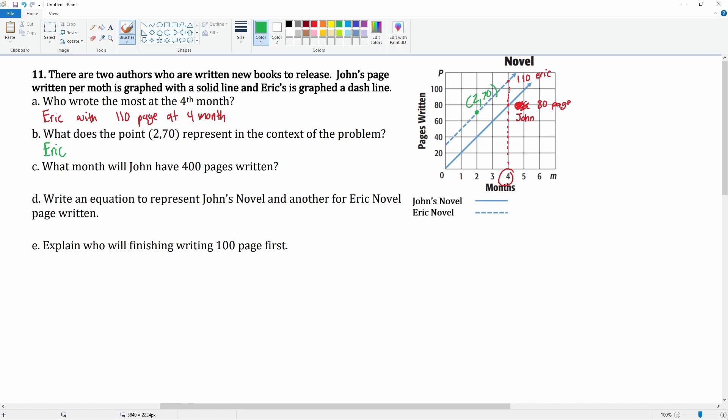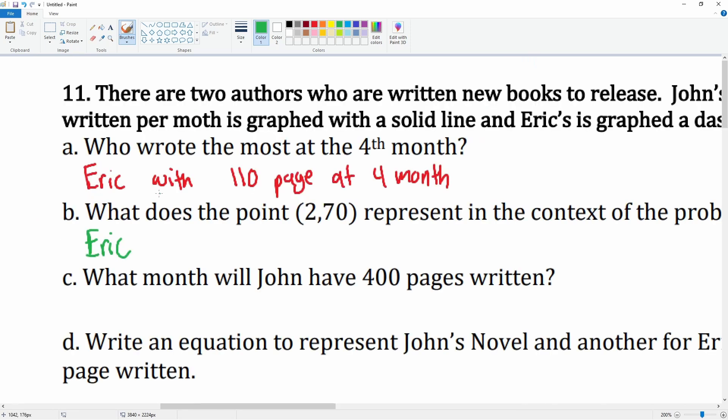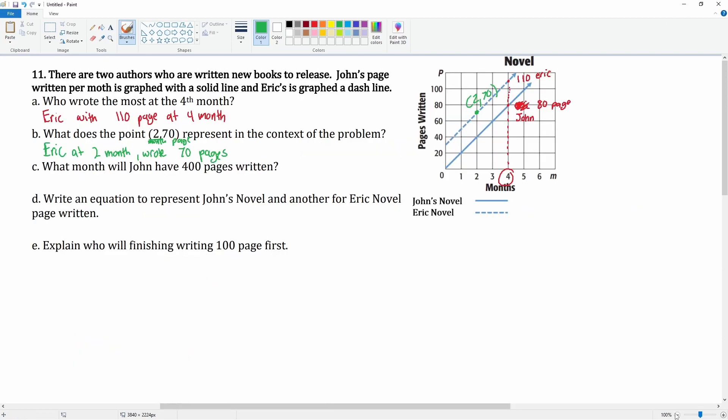months and the y-axis is pages written. So Eric at two months—that's what this is, the x, which is months—wrote 70 pages. Okay, this is pages right here. That's what the (2, 70) represents. Okay, next.